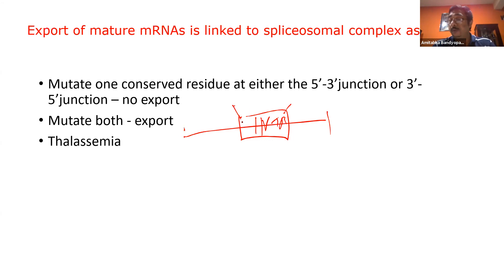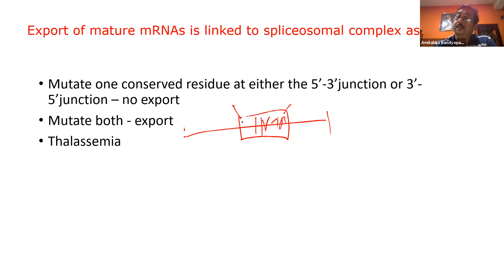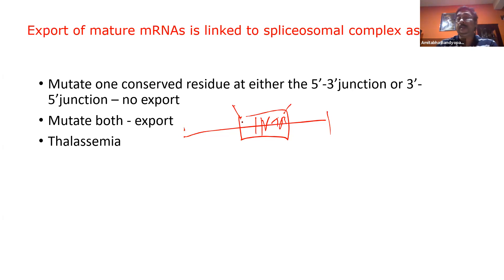In thalassemia — the genetically inherited blood disorder — there are certain cases where the loss of beta-globin production is basically due to a defect in the splice site: the splice site is mutated. There is no problem with the actual coding region, but because the splice site is mutated, less globin RNA is available in the cytosol for translation, and therefore the patients suffer from thalassemia.